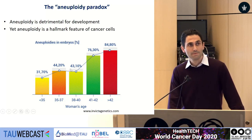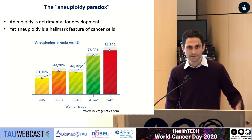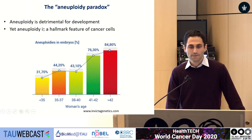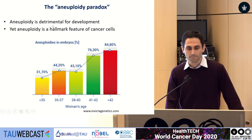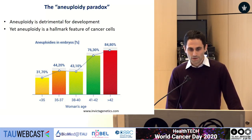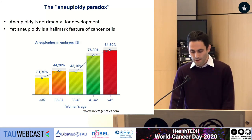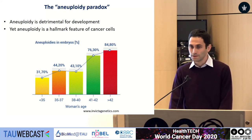At the same time, however, in cancer — which is another disease characterized by proliferation — aneuploidy is very prevalent. And not only is it being tolerated, but we actually have evidence that suggests it can drive the formation and progression of the disease.